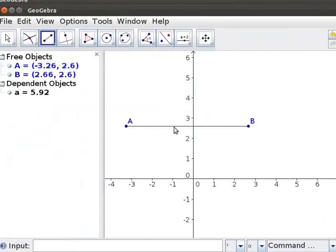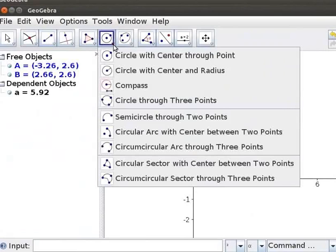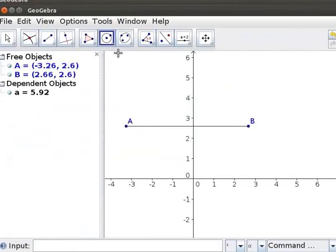Let us construct a Circle with Center A and which passes through Point B. To do this, click on the Circle with Center through Point Tool. Click on the Point A as Center and then on Point B.